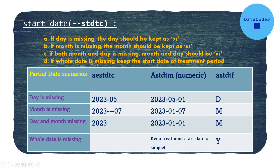Let's see some examples — first for the start date in the domain ADAE or ADCM. There are four scenarios: if the day is missing, the day should be kept as 01, the first day of the month; if the month is missing, the month should be kept as 01, meaning January; if both month and day are missing, then both should be set to 01-01; and if the whole date is missing, you can use the start of treatment date or follow your SAP for the appropriate imputation rule.